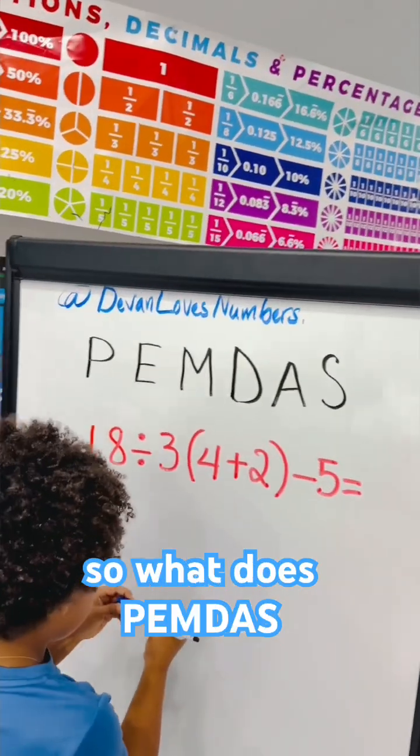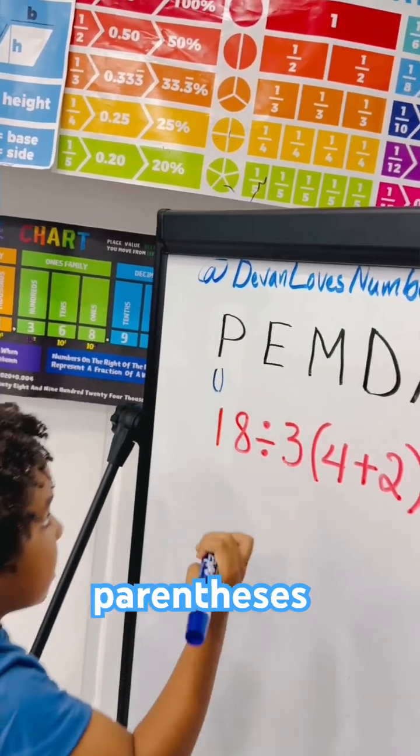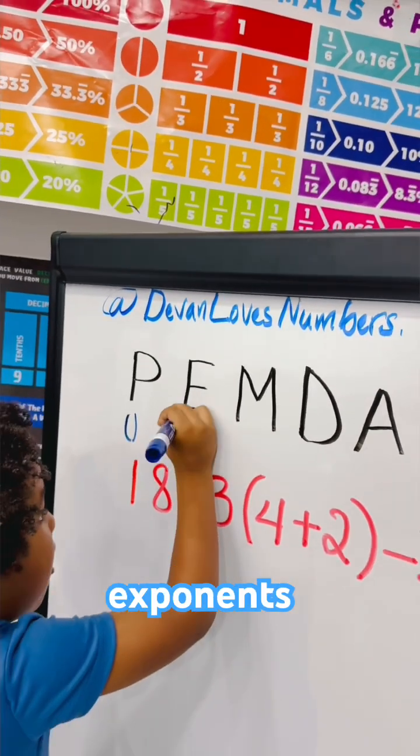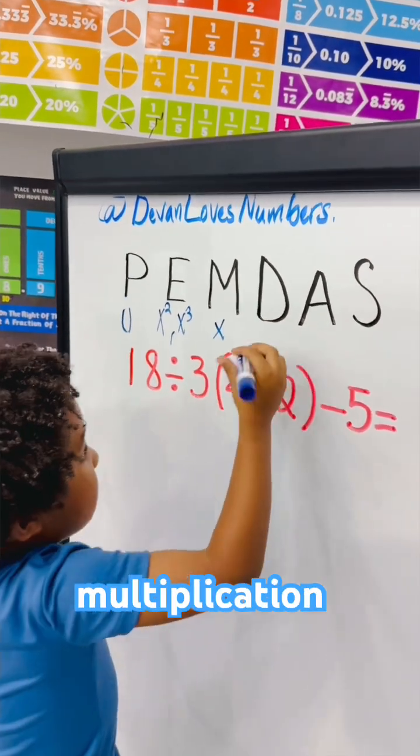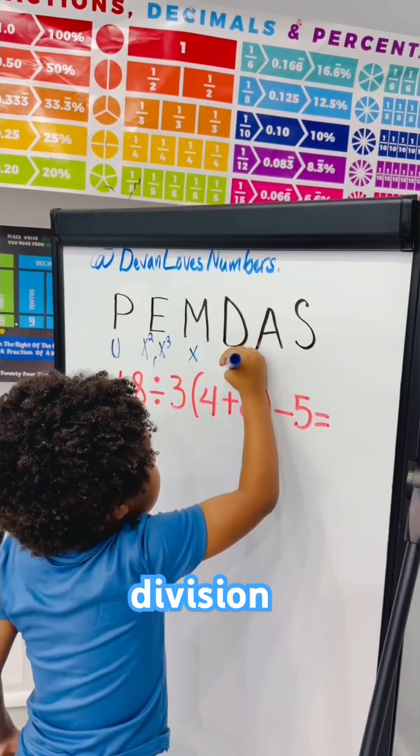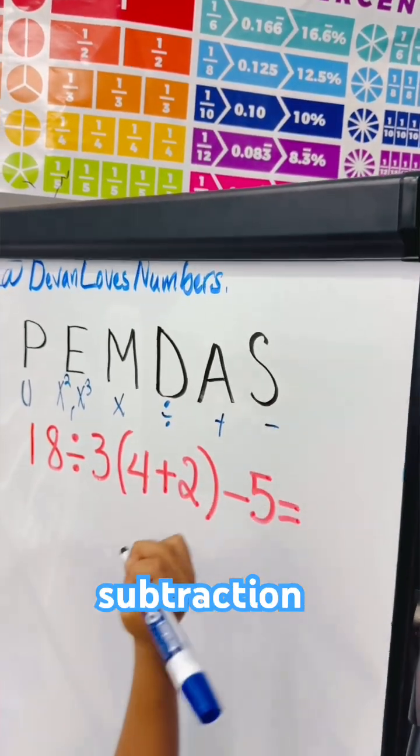So what does PEMDAS stand for? P means parentheses. E means exponents. Okay. M means multiplication. D means division. A means addition. And S means subtraction.